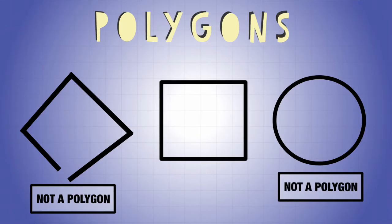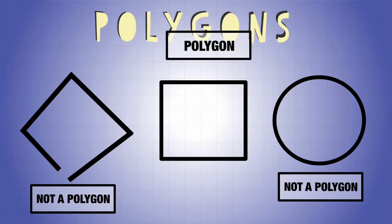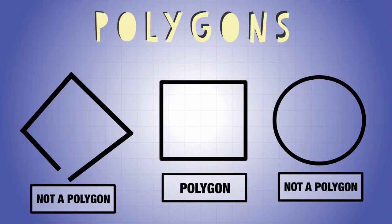...it has curves on it and it's not composed of all line segments. While it's closed, it's not composed of line segments, so it's not a polygon, which leaves us to the middle one. A square is a polygon because of two things...